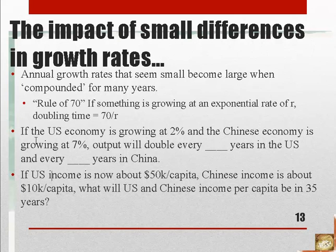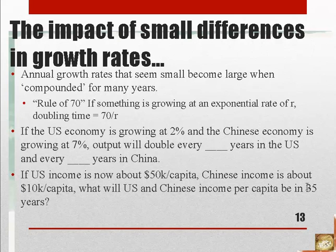Here are some questions: If the U.S. economy is growing at 2% per year, how many years does it take for output to double? And if the Chinese economy is growing at 7% per year, how long does it take output to double in China? Building on that — U.S. income per head is about $50,000 and Chinese income per head is about $10,000 — what will U.S. income have grown to after 35 years at 2% per year, and what will Chinese income have grown to at 7% per year for 35 years? Think about how many doubling times the U.S. and China each get over 35 years.